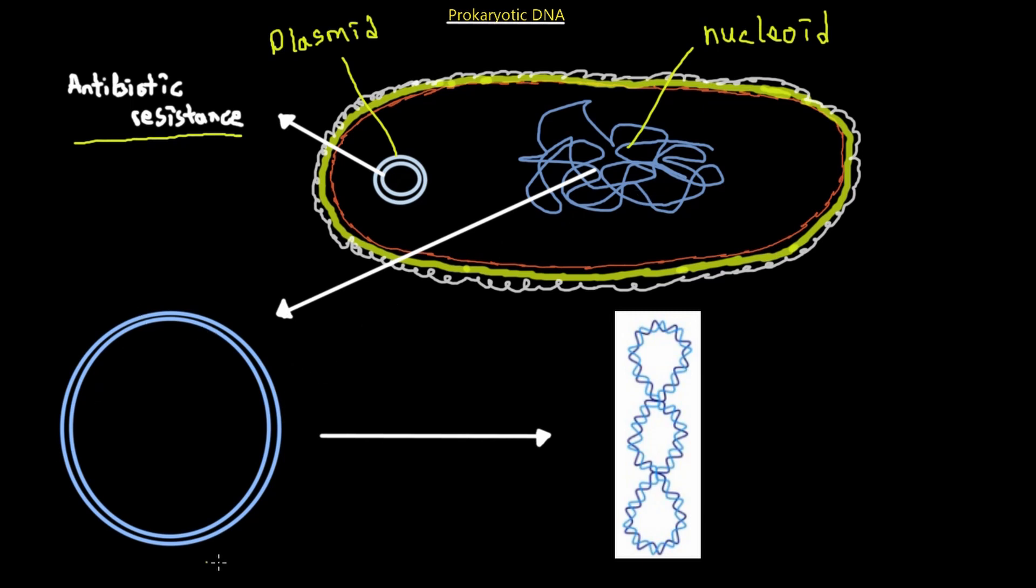So again, if we were to take this nucleoid and this single circular, double-stranded DNA, and we were to coil it, this is called supercoiling. It would look something like this. And this is pretty much the same as what we see in the nucleoid. And so that is just the typical structure of prokaryotic DNA.